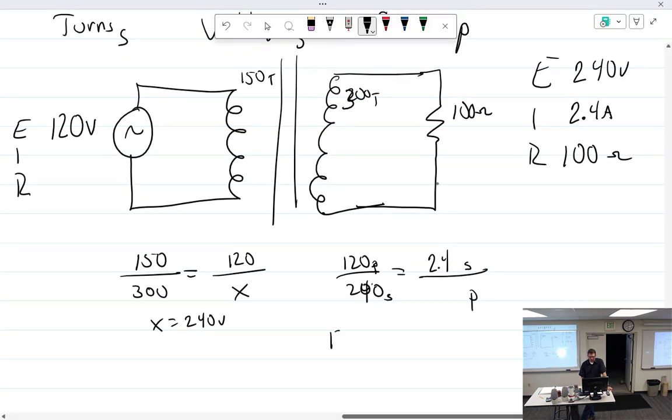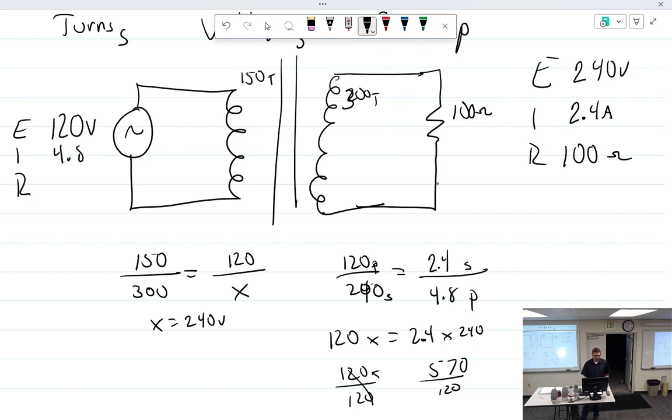So it's 120x equals 2.4 times 240. 2.4 times 240 equals 576, 120x. Divide both sides by 120. 576 by 120 equals 4.8. So this is 4.8 amps. That makes more sense.